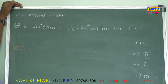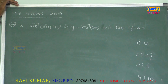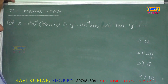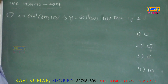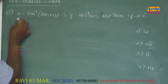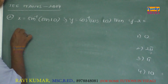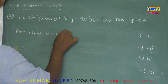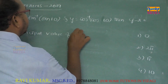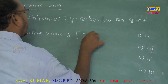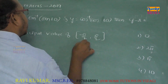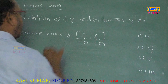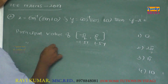Next question: x equals sin⁻¹(sin 10) and y equals cos⁻¹(cos 10), then y minus x equals? The principal value of sin⁻¹ is between -π/2 to π/2, that is approximately -1.57 to 1.57.